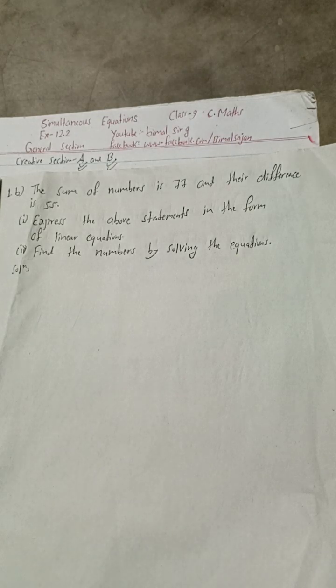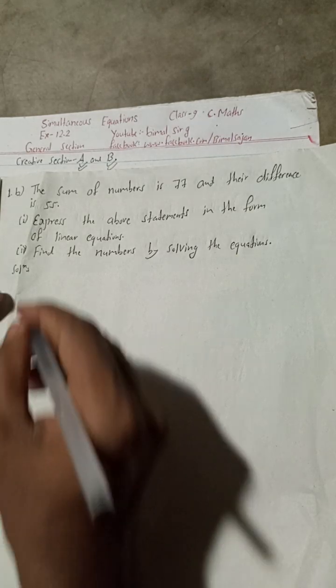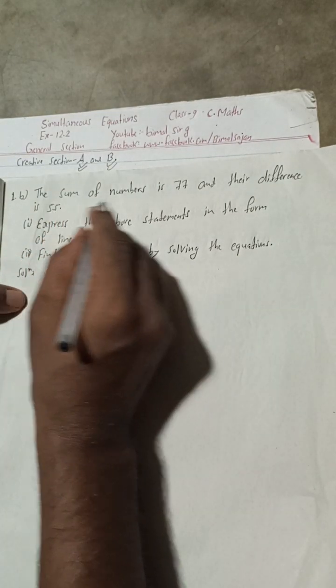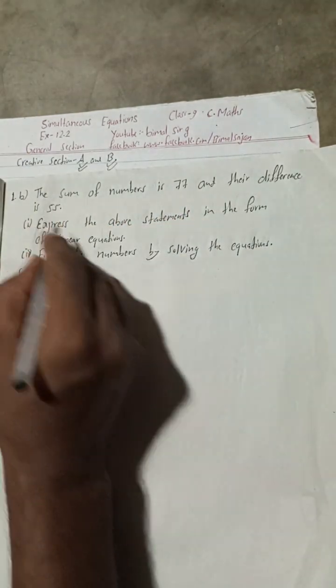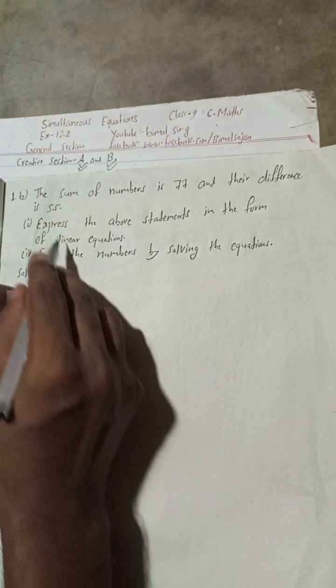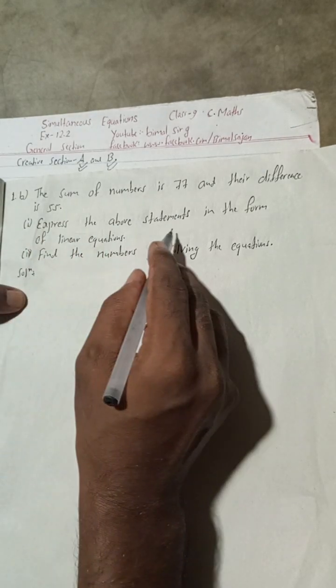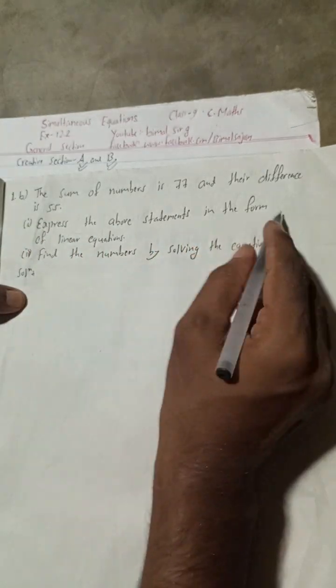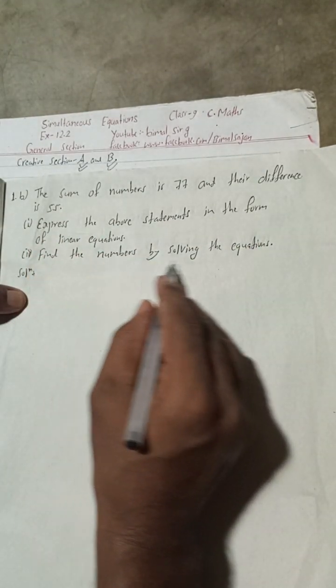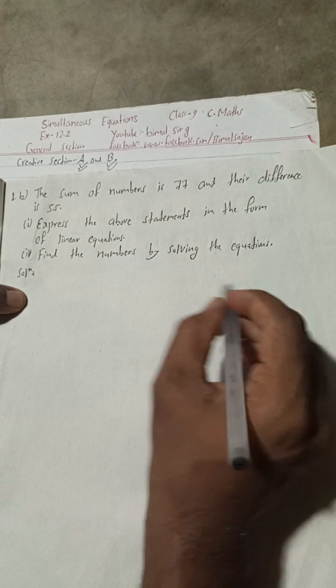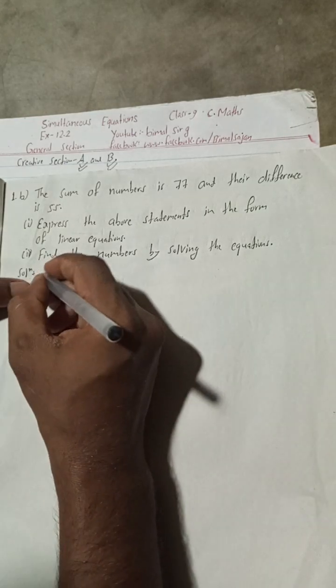Let's begin the solution. The sum of two numbers is 77 and the difference is 55. Express the above statements in the form of linear equations and find the numbers by solving the equations.